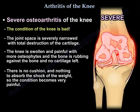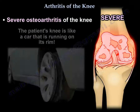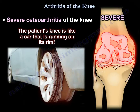In severe osteoarthritis, the condition of the knee is bad — the joint space is severely narrowed with total destruction of the cartilage. The knee is swollen and painful with more osteophytes, and bone rubs against bone with no cartilage or cushion left to absorb the shock. The patient's knee is like a car running on its rim.